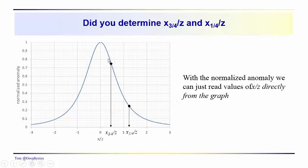The anomaly drops off to three quarters of its maximum value at a value of x over z approximately equal to 0.45 and to one quarter of its maximum value at about 1.25, x one quarter over z equal to 1.25.